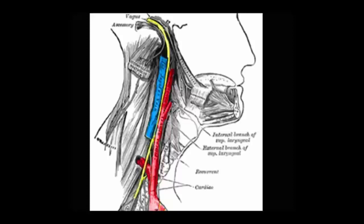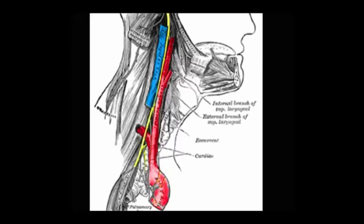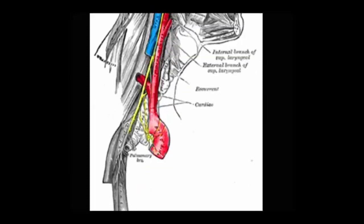As it carries on down into the mediastinum, it gives off a number of branches to mediastinal structures, to the arch of the aorta, to the bronchi, to the lungs, and then carrying down to the abdomen, giving off branches subsequently to the stomach and the gastrointestinal tract.